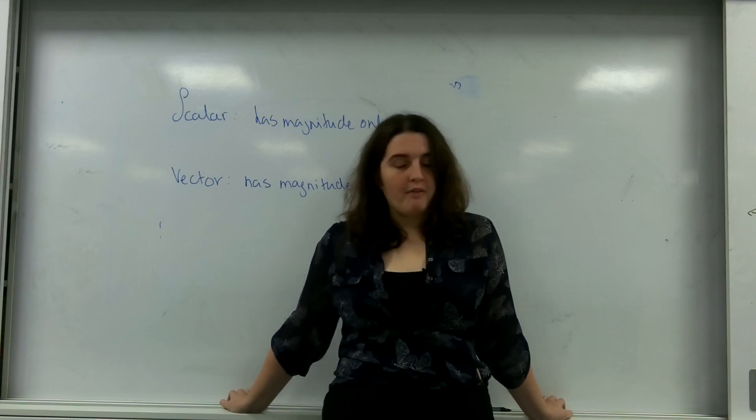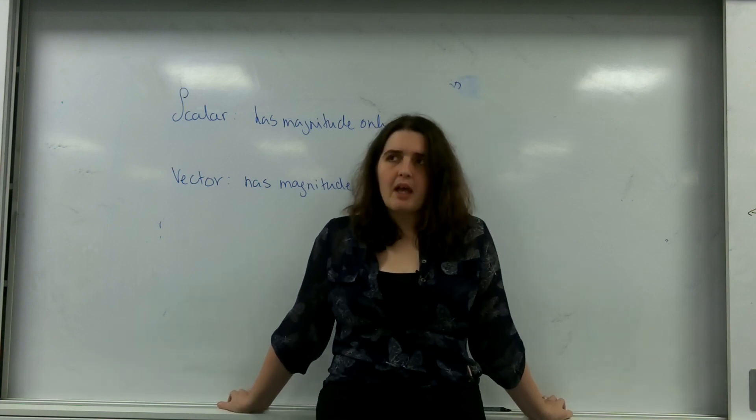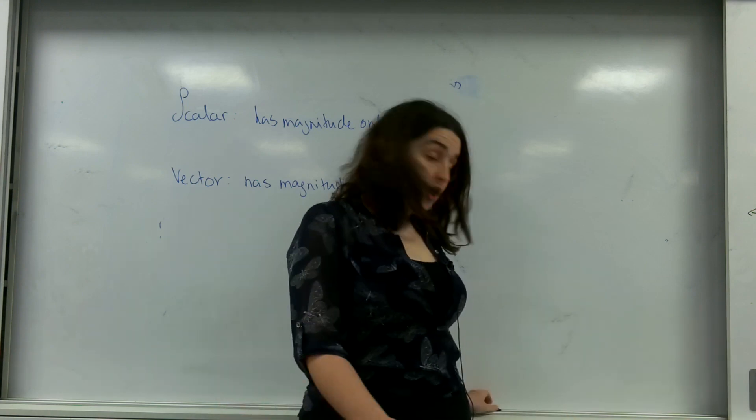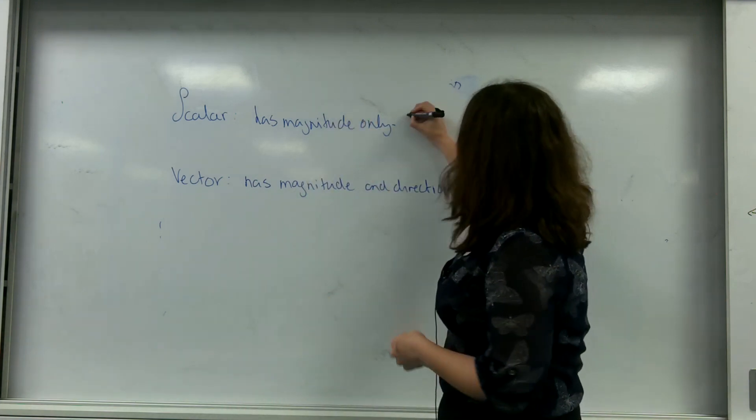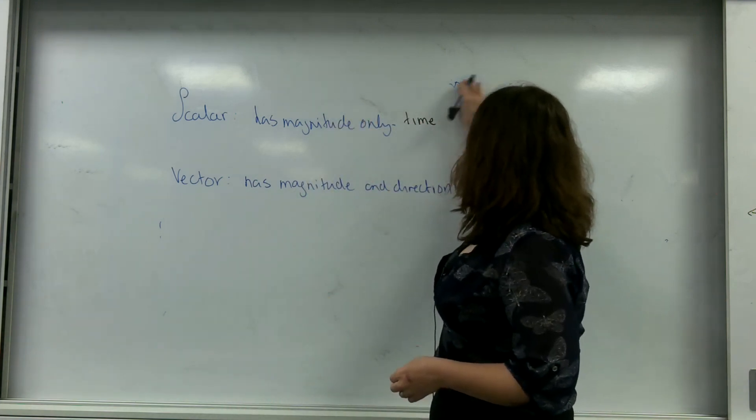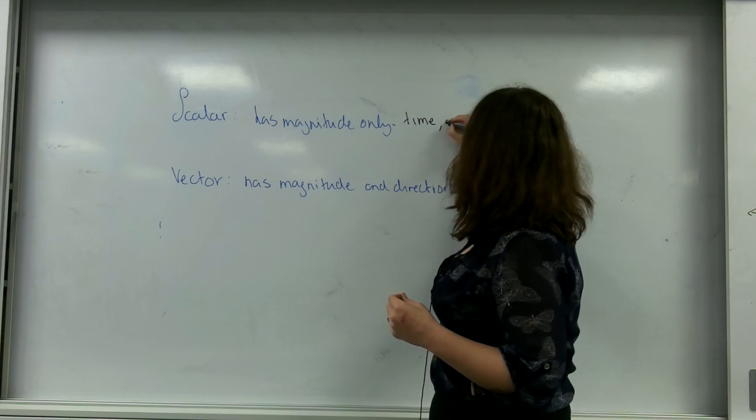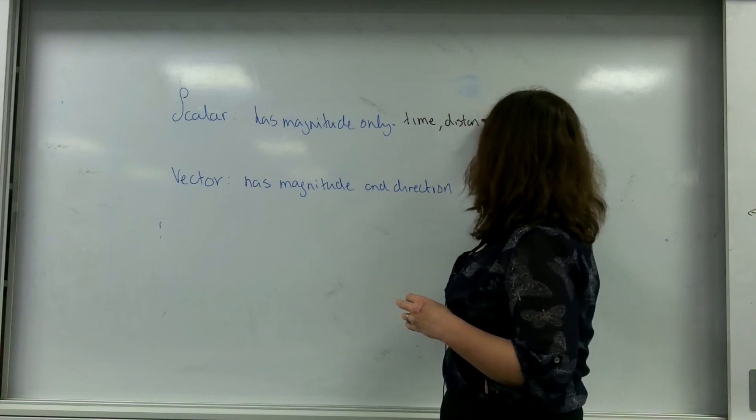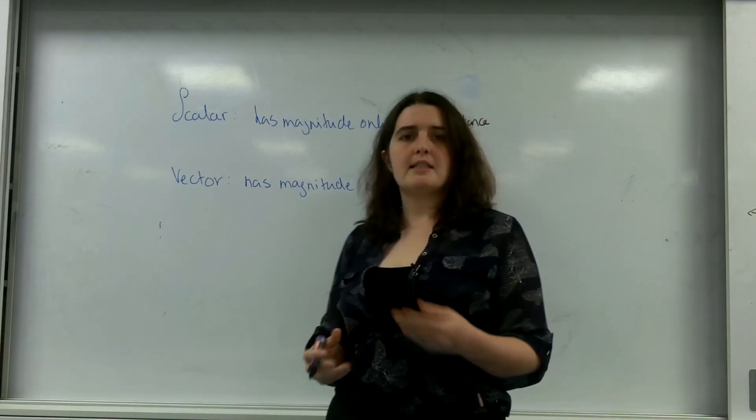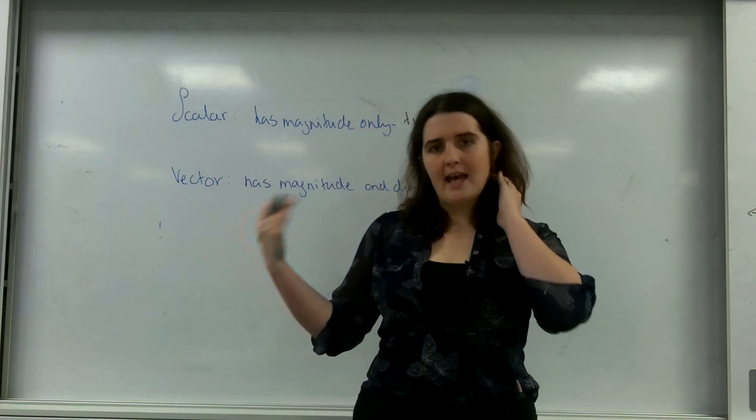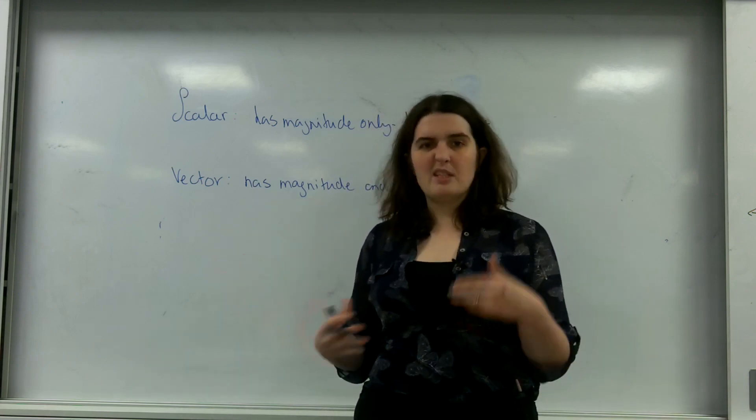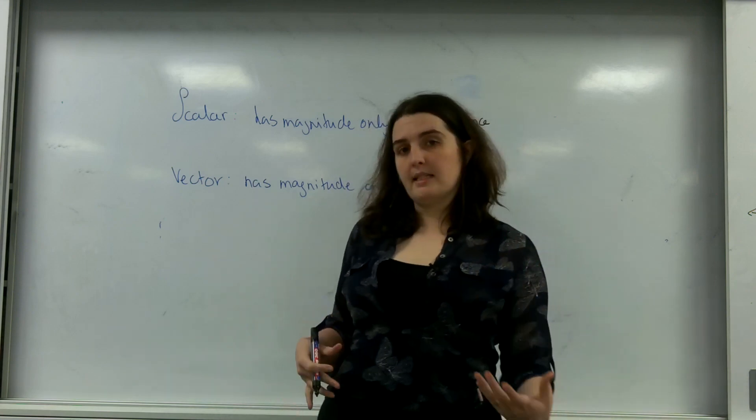A scalar quantity is one that only has magnitude. And things like that are time, distance, and when I say distance, it's important to say distance travelled. So even though I've gone there and back again, the total distance I have travelled is this amount.